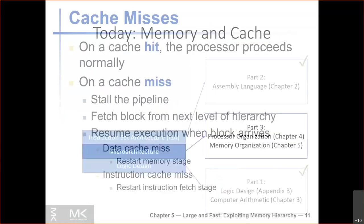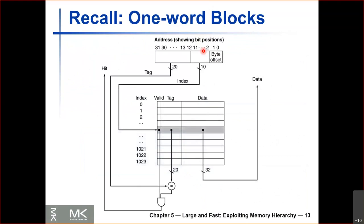Today we'll talk about two things: first, having larger blocks, and second, writing through the cache. Last time we used one-word blocks, which is not realistic. In actual processors, cache lines or cache blocks are usually much longer than one word, and this is to benefit from spatial locality. If we bring in a word, we're most likely going to access other words nearby it, so it makes sense to bring in those neighboring words by having a larger cache block.